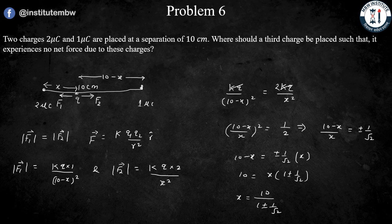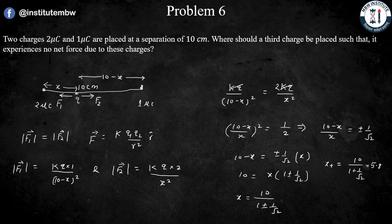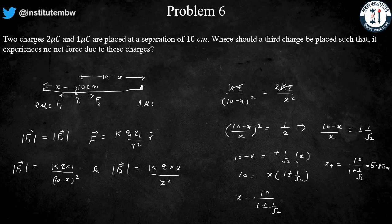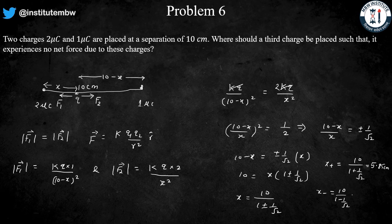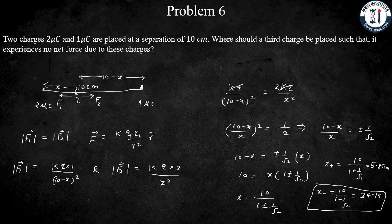So for the plus value, I am assuming that is x plus, so x plus is equal to 10 over (1 plus 1 over root 2). After solving, x plus will be 5.85 centimeters. And for the minus root, that is x minus is equal to 10 over (1 minus 1 over root 2), that will be 34.14. So this value is not possible and you guys have to comment in the comment section why this value is not possible.